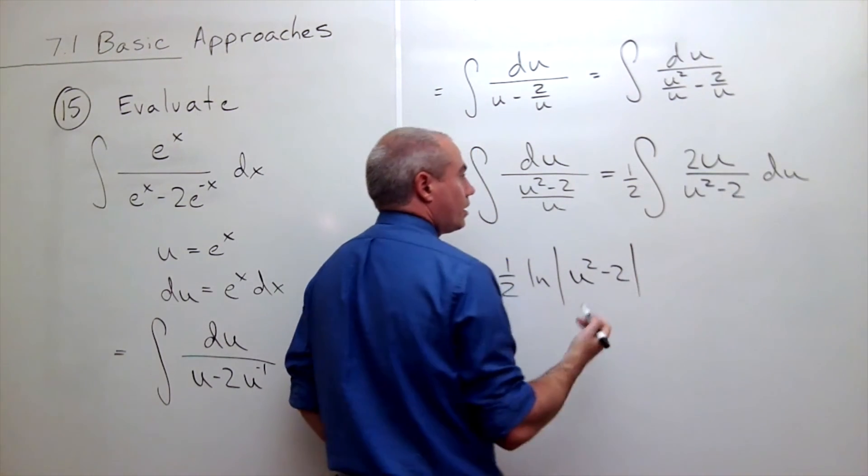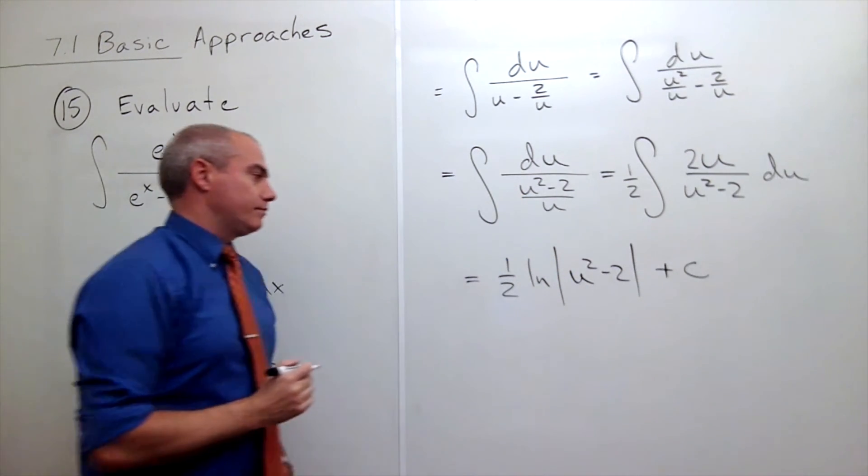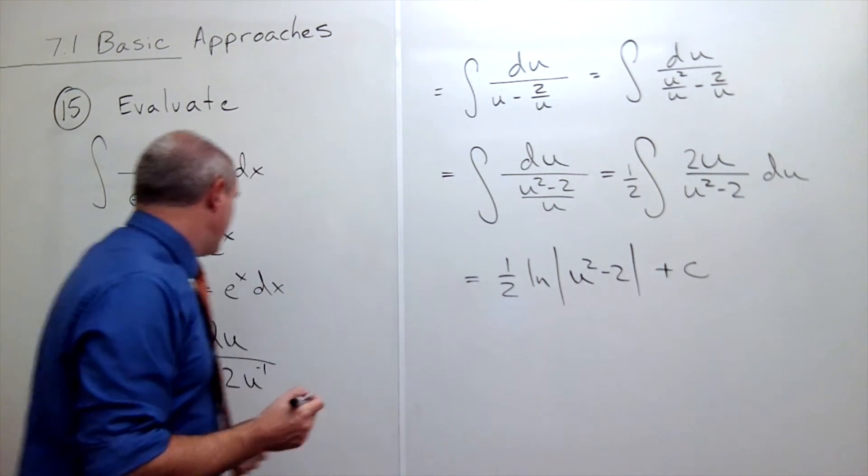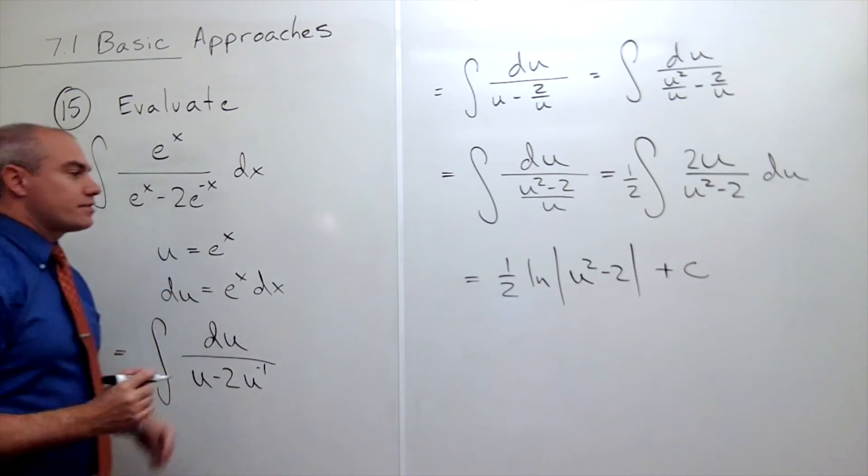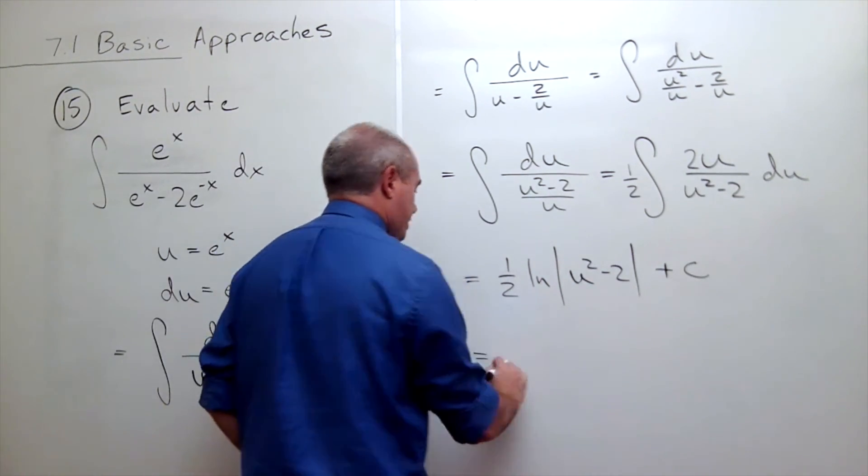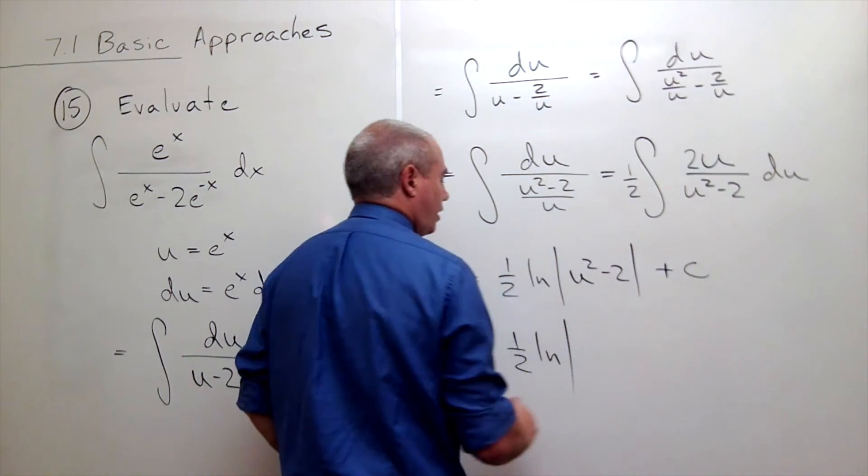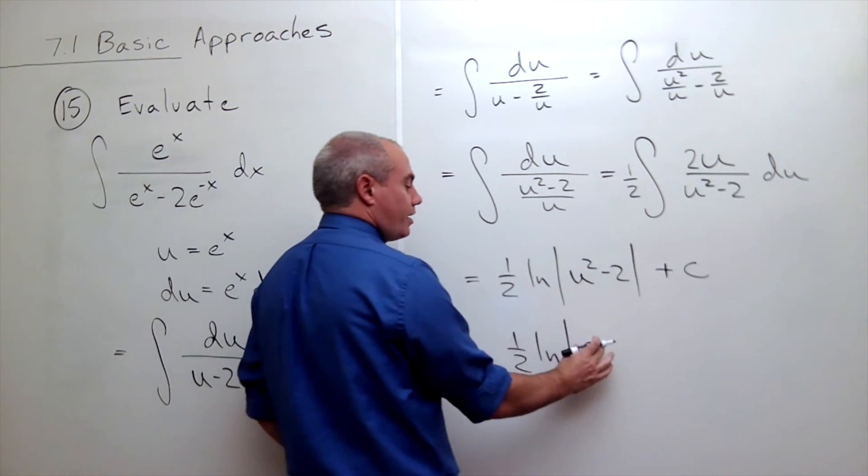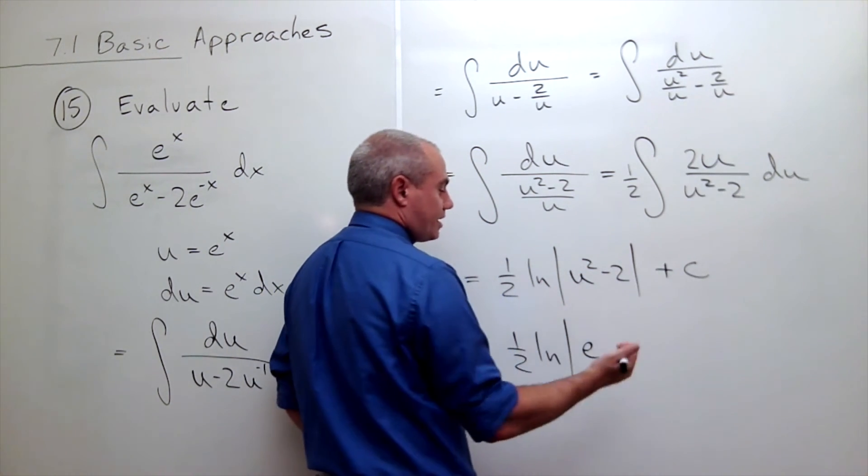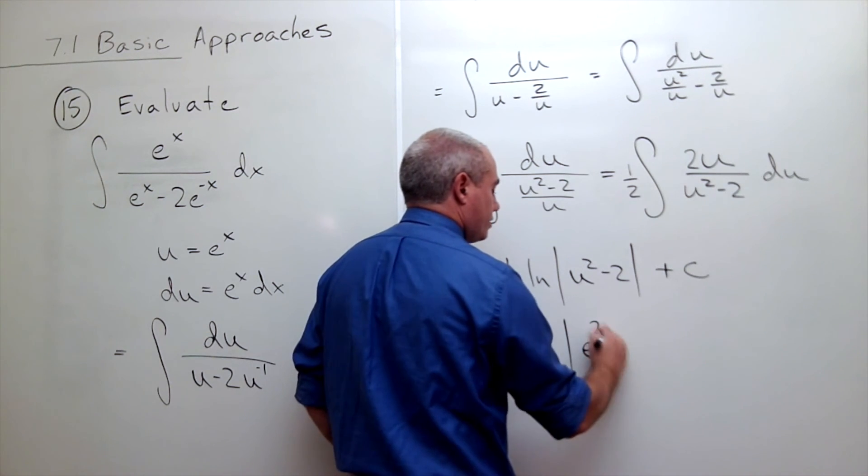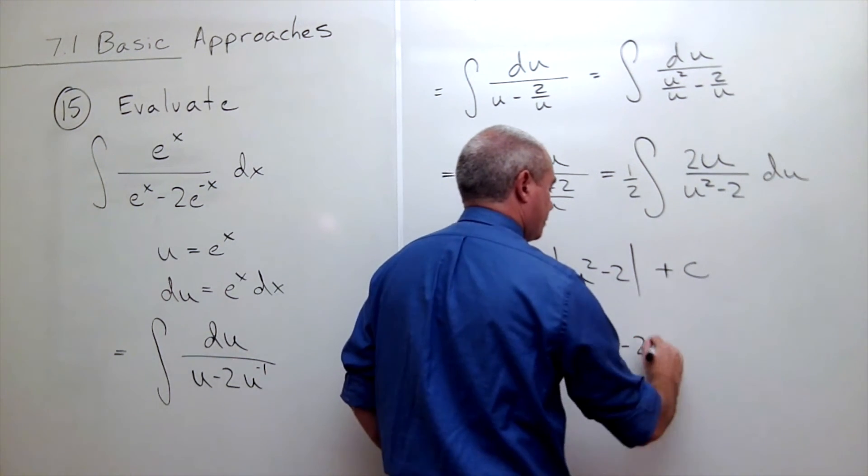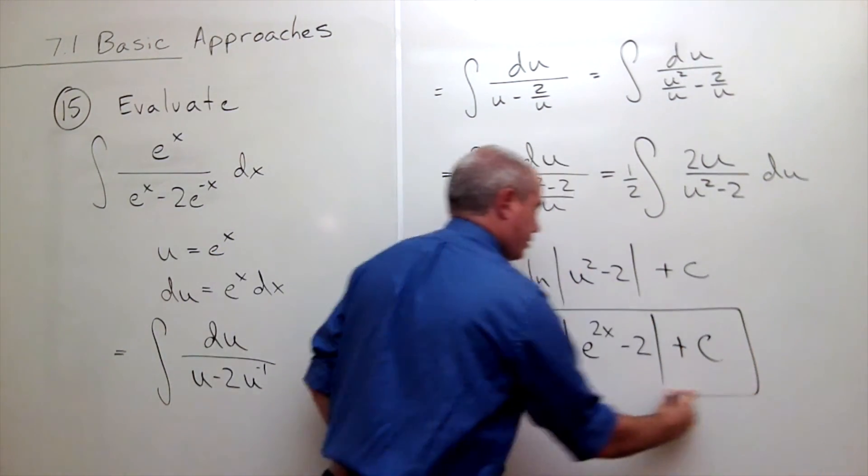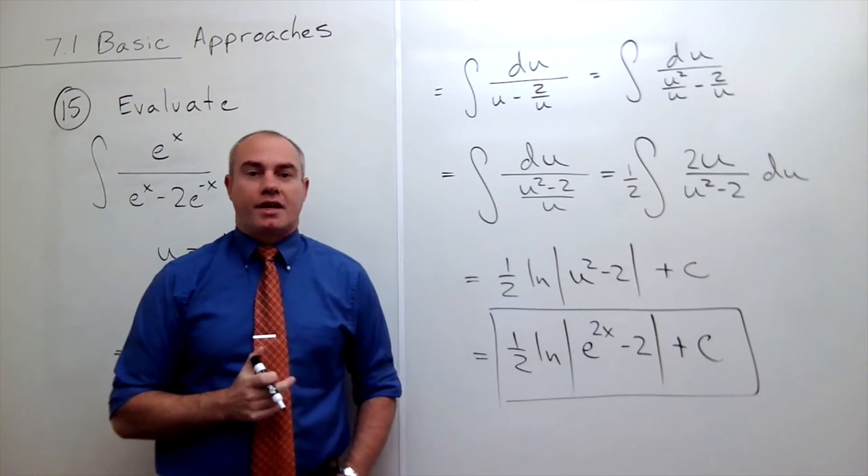u we said was e to the x, so we can rewrite this as one half ln of the absolute value of e to the x squared. Well, if I square e to the x I get e to the x times e to the x, or e to the 2x, minus 2 plus C. And this is my anti-derivative.